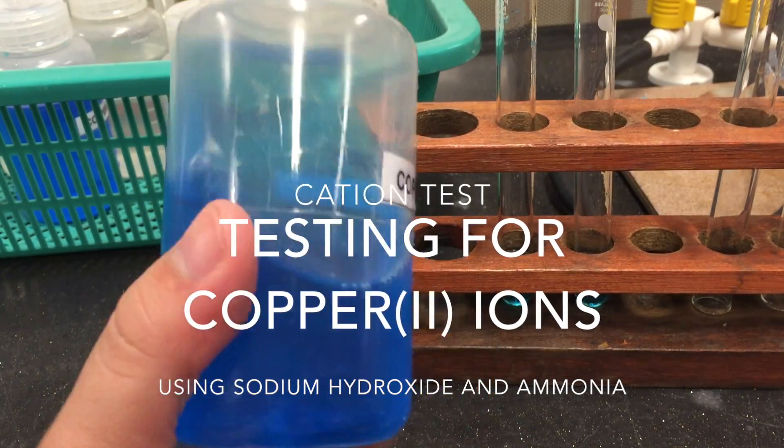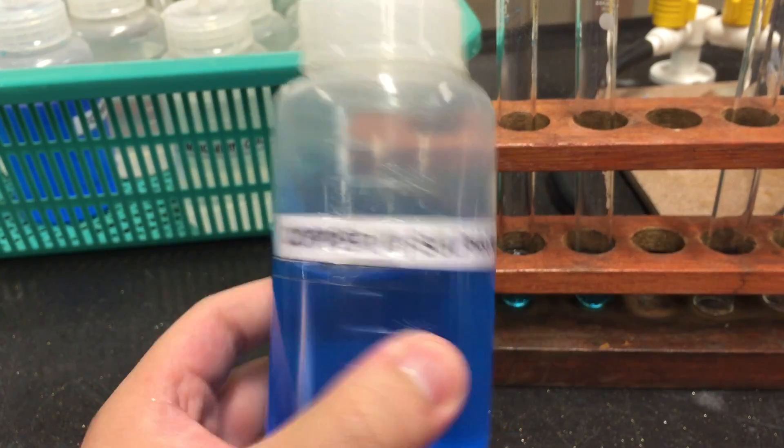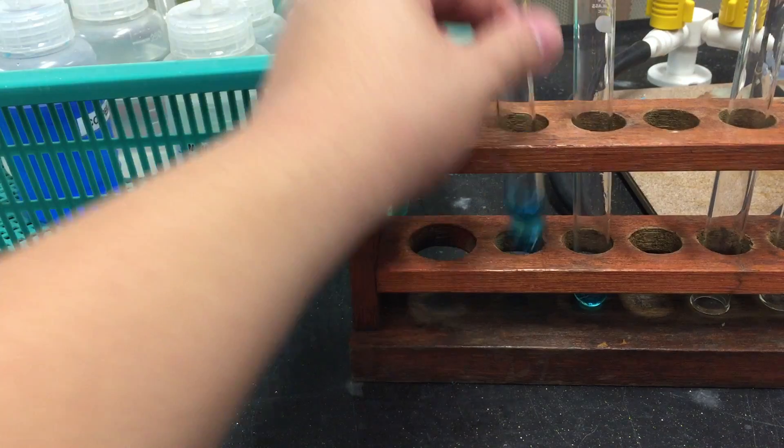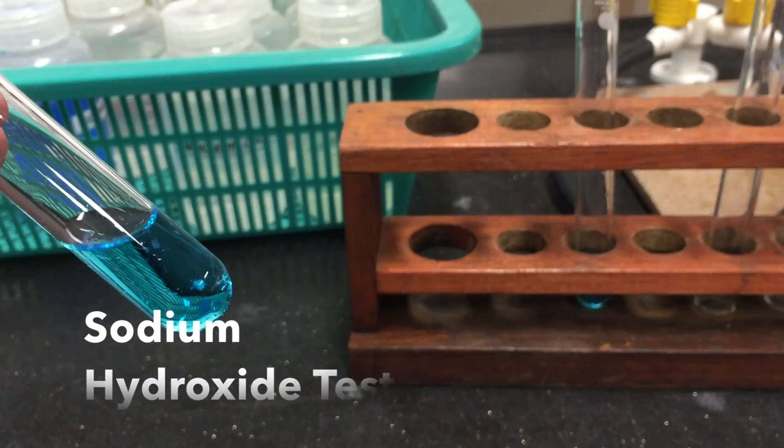Solutions containing copper ions are usually blue in color. To test for copper ions, one of the tests we can use is the sodium hydroxide test.